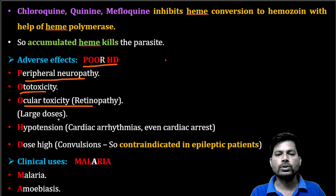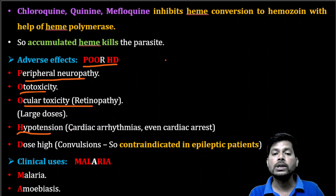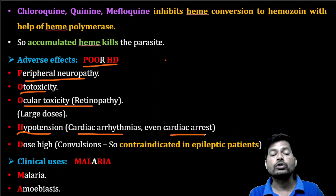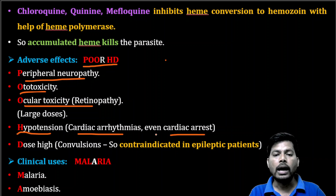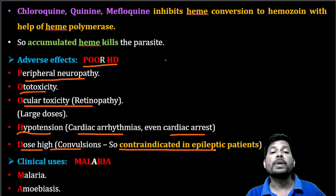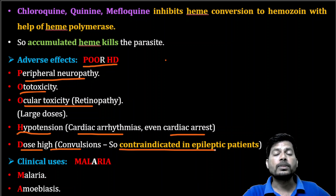Next is hypotension. Chloroquine on long-term use develops cardiac arrhythmias — abnormality in the heart rhythm — and even cardiac arrest, meaning stoppage of heart function. At high doses it can also produce convulsions.